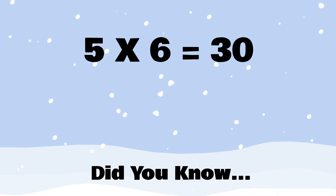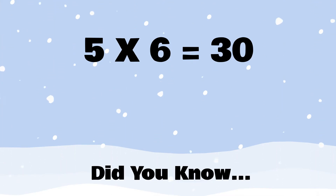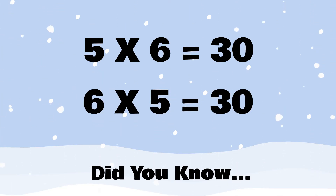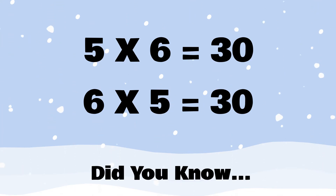Did you know that if you know that 5 times 6 equals 30, then you also know that 6 times 5 equals 30? All you have to do is switch the two factors around. The 5 and the 6 are called factors. This will help you with fact families when you get ready to learn division.